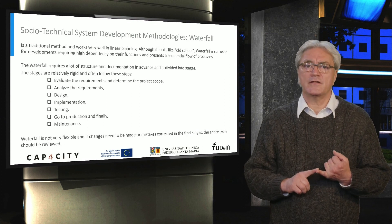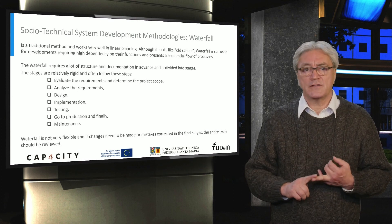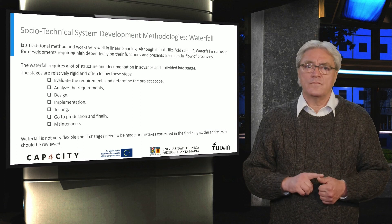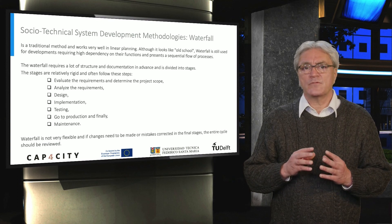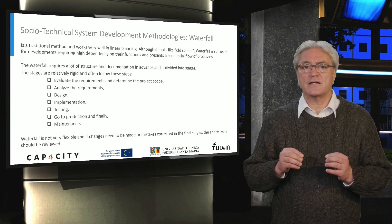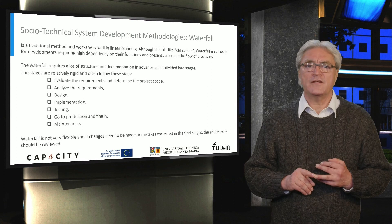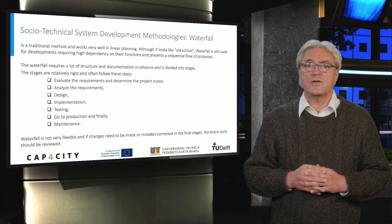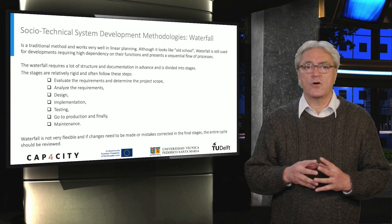The stages are relatively rigid and often follow these steps: evaluate the requirements and determine the project scope, analyze the requirements, design, implementation, testing, go to production, and finally maintenance. Waterfall is not very flexible, and if changes need to be made or mistakes corrected in the final stages, the entire cycle should be revisited. Usually, one stage must be completed before the next begins, and this helps organize tasks. Waterfall is often used by large plan-based teams that have a very clear understanding of the scope of the project.